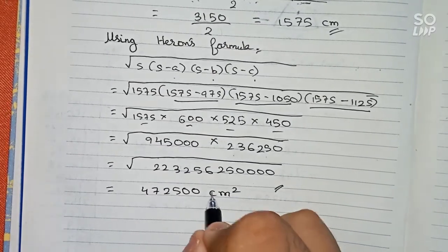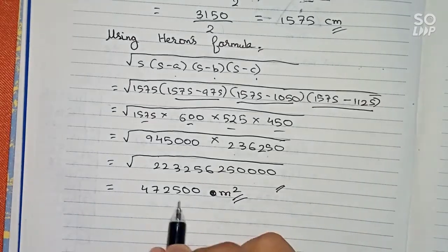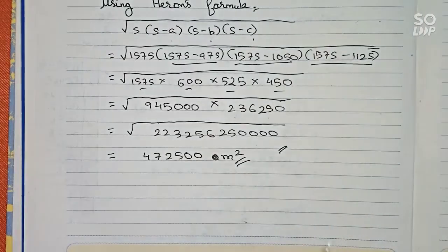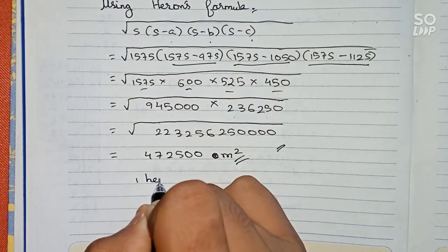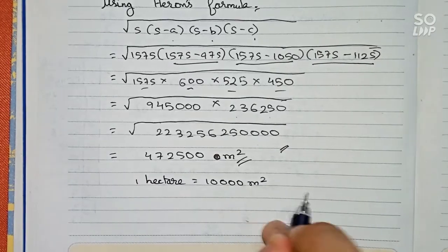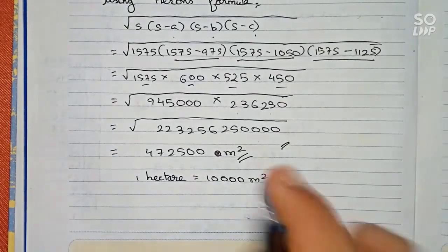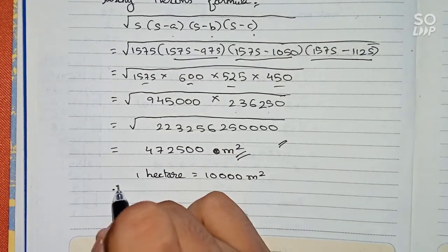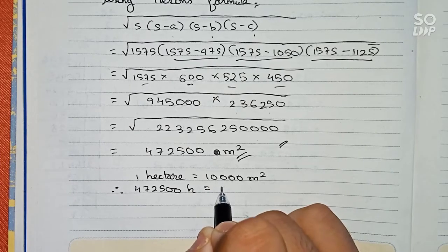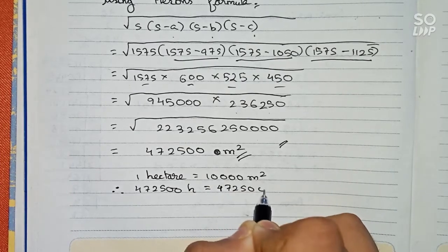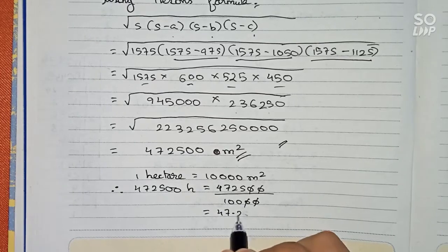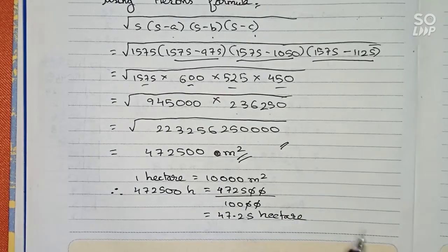Now it is given in the question that it is 1000 rupees per hectare. So one hectare will be 10,000 meter square. This is the relation between them. So therefore we can write 472,500 meter square is equal to 472,500 divided by 10,000. So it becomes 47.25 hectare. So that means the total area of the triangle is 47.25 hectare.